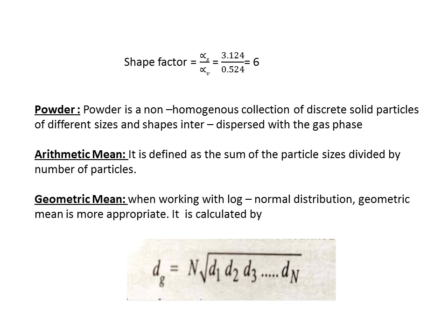Powder is defined as a non-homogeneous collection of discrete solid particles of different sizes and shapes inter-dispersed with a gas phase. When all particles of different sizes and shapes are grouped together, it is said to be a powder.